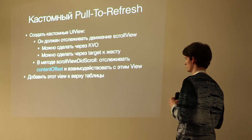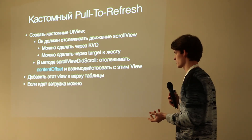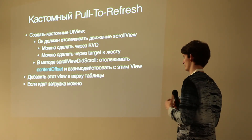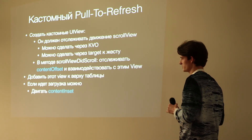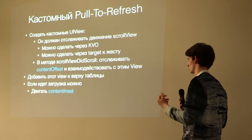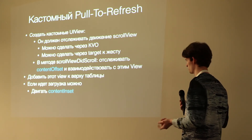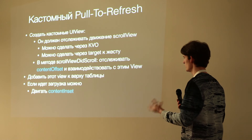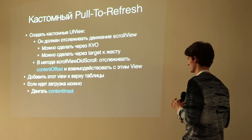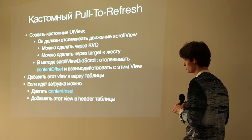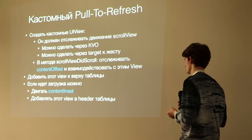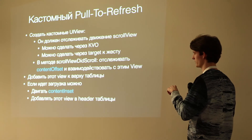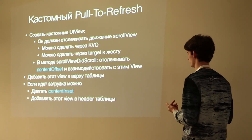Добавляем этот view к верху таблицы. Как показать загрузку — то есть тот момент, когда pull-to-refresh не должен уйти с экрана, потому что формально он прикреплён к верху таблицы? Есть первый элегантный сценарий: сделать отступ сверху отрицательным — скажем, минус 100, если pull-to-refresh занимает 100 поинтов. Держать так до тех пор, пока контент не загружен. Второй сценарий: добавить этот view в header таблицы, но нужно отслеживать прыжки view и желательно не потерять анимацию.